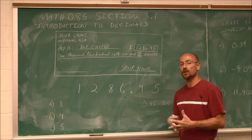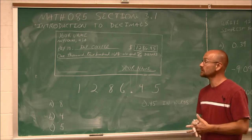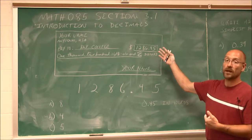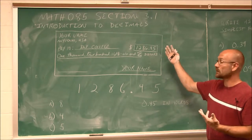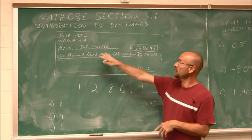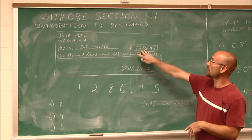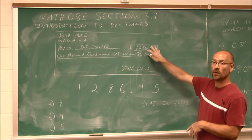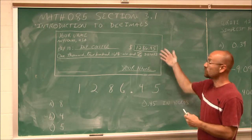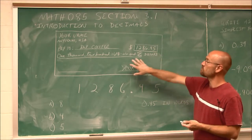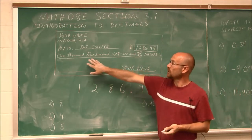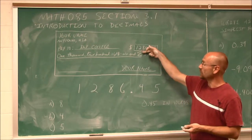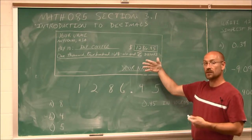We encounter decimals on a daily basis, especially if we deal with money. In this example, maybe we have to write a check for our tuition. Pay to Bay College, 1,286 and 45/100, or 45 cents.